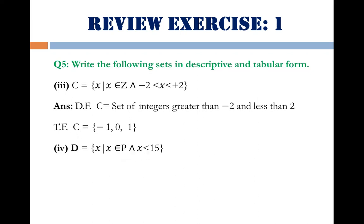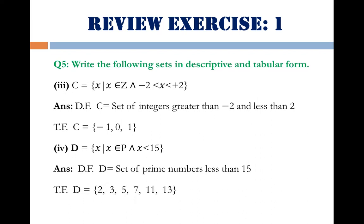Part 4: {x | x ∈ P and x < 15}. P stands for the set of prime numbers. The descriptive form is: set of prime numbers less than 15. The tabular form is: {2, 3, 5, 7, 11, 13}. Just to remind you, prime numbers are numbers divisible by exactly two numbers — that is, a prime number has exactly two divisors. Hope you understand.